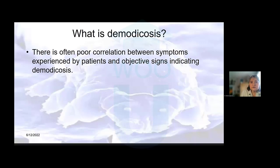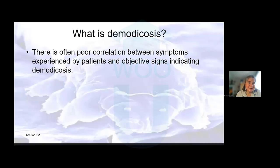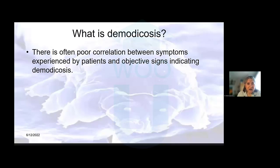There is poor correlation between symptoms experienced by patients and objective signs indicating demodex overpopulation. This sounds like dry eye — the signs and symptoms don't agree. There is truly a lot to think about in dry eye and surface disease and the presence or overpopulation of the demodex mite.